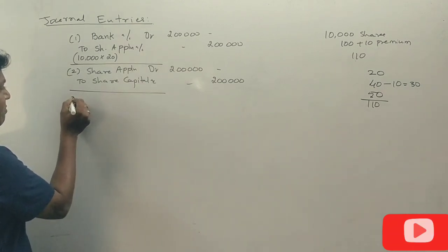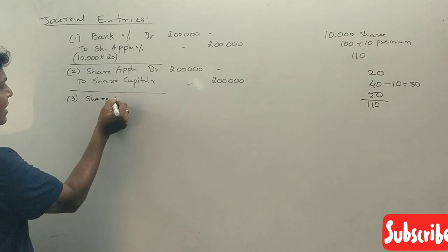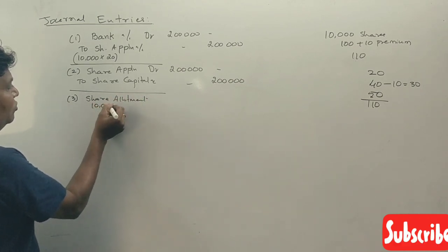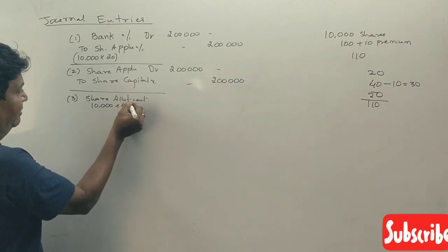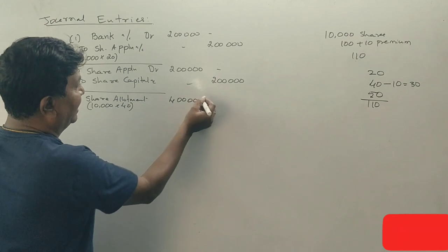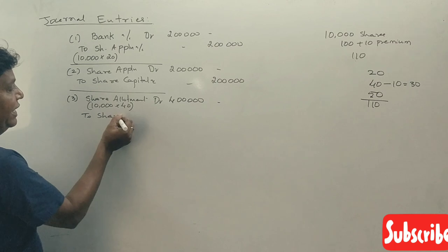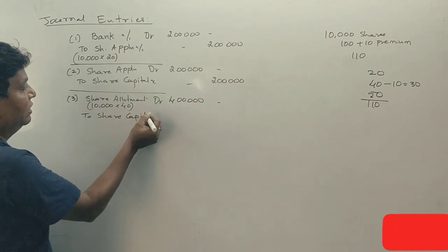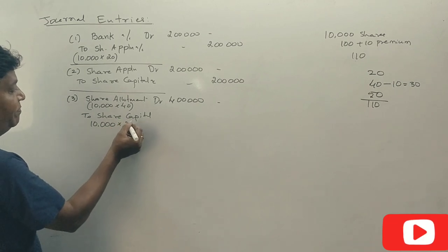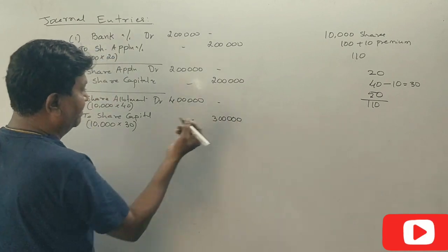Allotment is very important. Share allotment is 10,000 into ₹30 rupees, which is ₹3 lakhs. Share allotment account debit to share capital account — ₹3 lakhs. Also, security premium or share premium is included in the allotment entry.